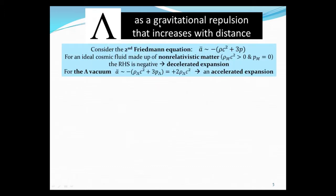We'll show that the lambda term corresponds to gravitational repulsion which increases with distance. Let's consider the second Friedmann equation, which is a double dot proportional to minus rho c squared plus 3 times pressure. For a cosmic fluid that's made of non-relativistic matter, the density is positive and the pressure equals zero. Therefore, the right-hand side is negative, and so we expect to have a decelerating expansion, a decelerating universe.